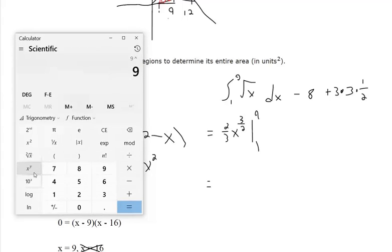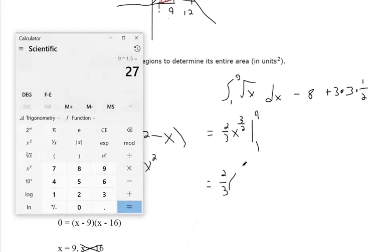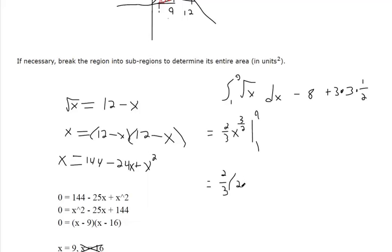Oh, times 2 thirds. So we just plugged in 9 in our calculator, raise it to 3 halves power, that's 27. And then 1 to the 3 halves power is just 1.